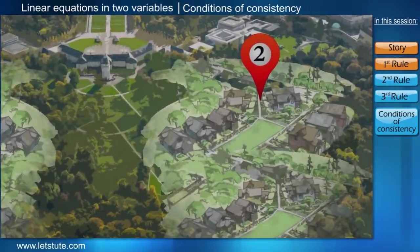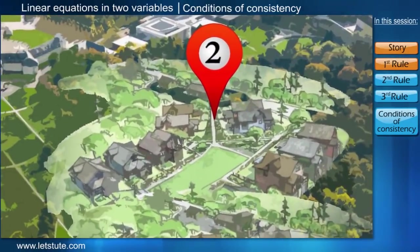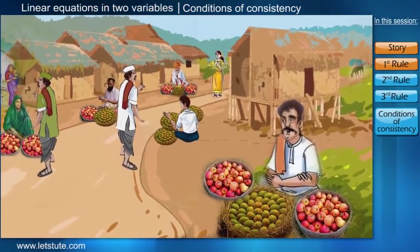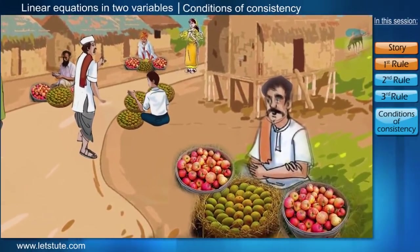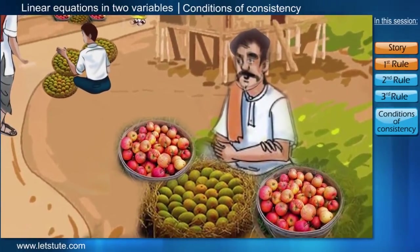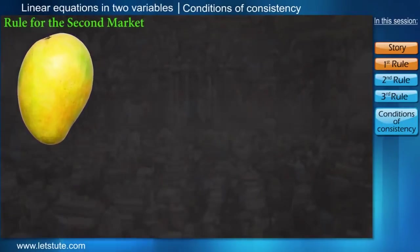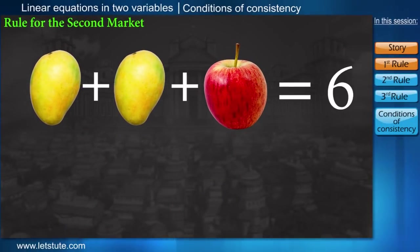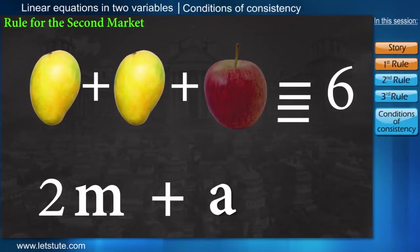For the second market, one will have to follow a little different rule. For the second market, the criteria was, a person willing to sell his products in this market can set any price for the individual fruit such that the price of two mangoes and one apple should total up to six rupees. So we can write it as 2m plus a equal to 6.